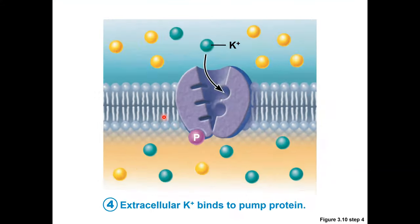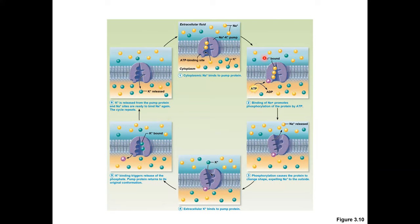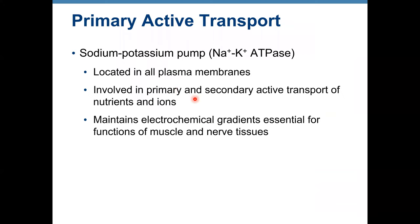Looking at the whole diagram, you can see this pump establishes a chemical gradient: higher concentration of sodium outside and higher concentration of potassium inside. To remember it, think of your cells as salty bananas — sodium and chloride outside, and potassium-rich like a banana inside. The sodium-potassium pump is located in all plasma membranes and is involved in primary and secondary active transport. It maintains the electrochemical gradient essential for functions of muscle and nerve cells.